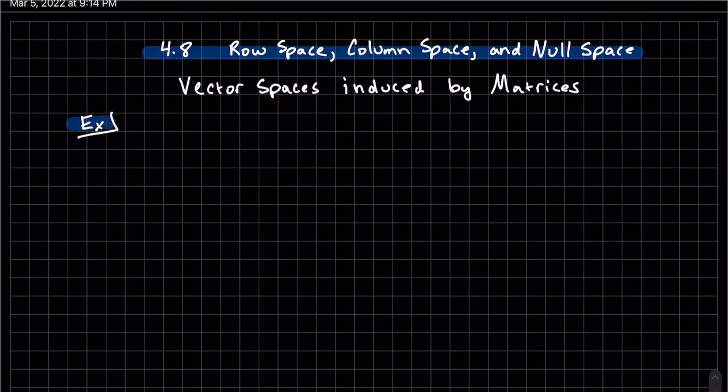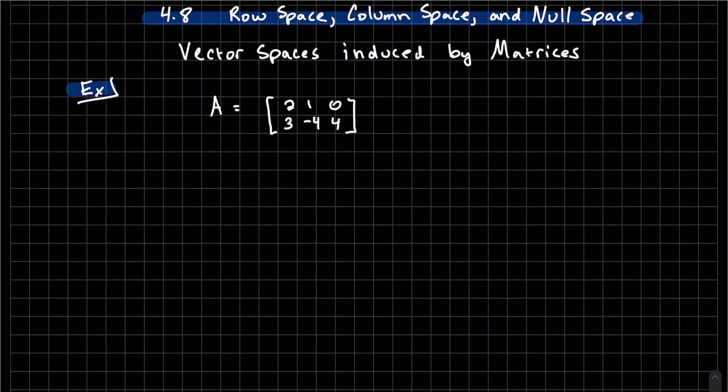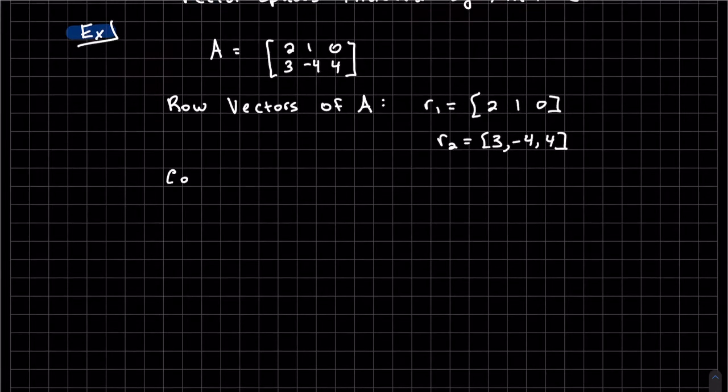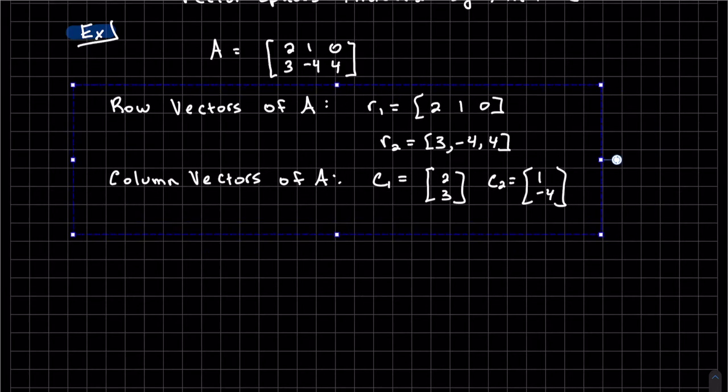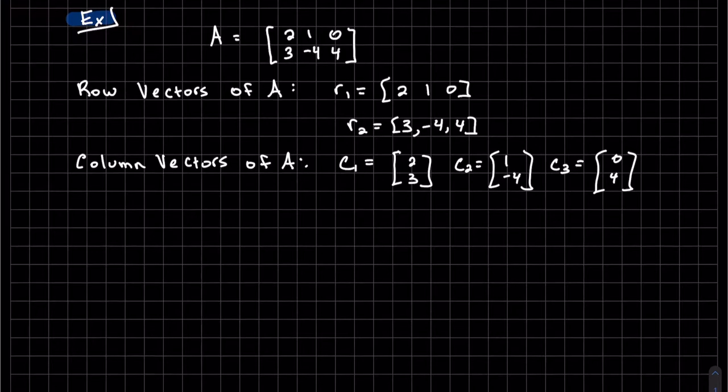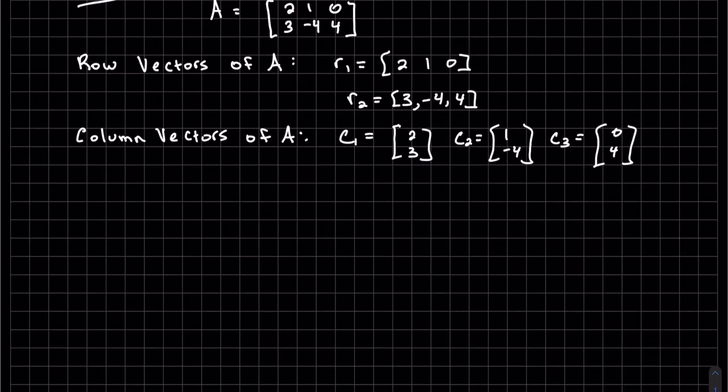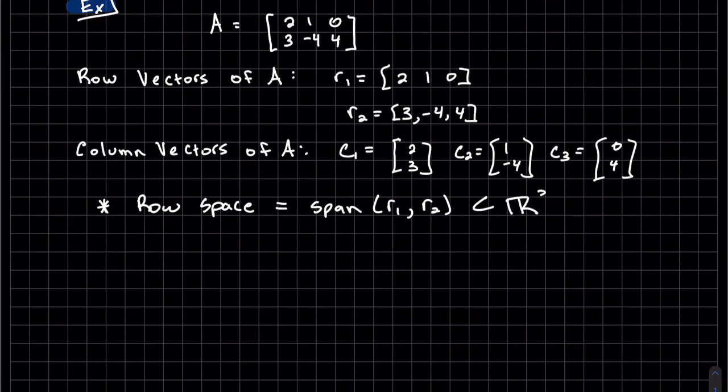We're going to start off with an example. So the row vectors of A are the two rows, R1 and R2. But what we're going to be looking for is the row space. And basically, that is the span of these two rows, which is a subset of R3. You can see these are elements of R3. Don't get misled here. The row space is not saying that it has two elements in it. We don't know that yet. We'll talk about that in the next section.